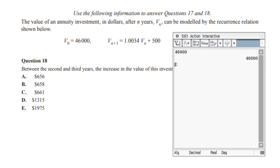The first thing we do is type in the 46,000 and press execute. Then we want to take this equation, multiply the answer which was 46,000, and add the 500. So this is V naught and this is V1.